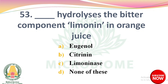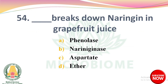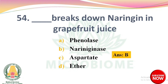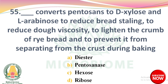The right answer is Option D: phosphodiesterase. Next question: dash hydrolyses the bitter component limonin in orange juice. Options: eugenol, citronin, limoninase, none of these. The right answer is Option C: limoninase. Next question: dash breaks down naringin in grapefruit juice. Options: phenolase, naringinase, aspartate, ether. The right answer is Option B: naringinase.